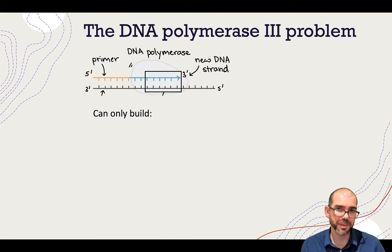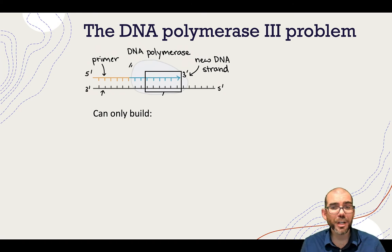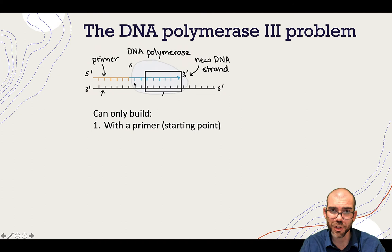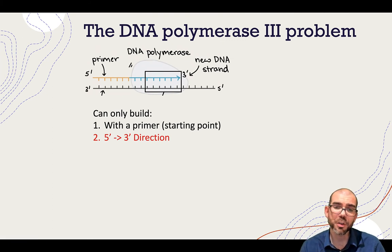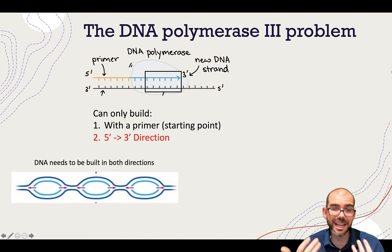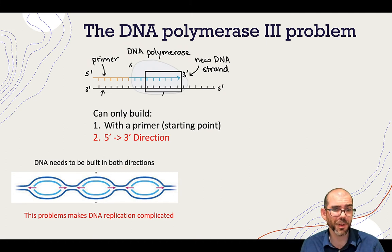This is a simplified model of DNA replication — it's not actually what happens. Let's add a little more sophistication. DNA polymerase III has a major problem: it can only build in one direction and in only one way. Specifically, polymerase III can only build if it has a primer to attach to — it needs a double strand to begin building off of. And most importantly, it can only build in the 5' to 3' direction. Polymerase cannot build in the opposite direction, but DNA needs to be able to build in both directions since we're building bubbles. This makes the specifics of DNA replication more complicated.